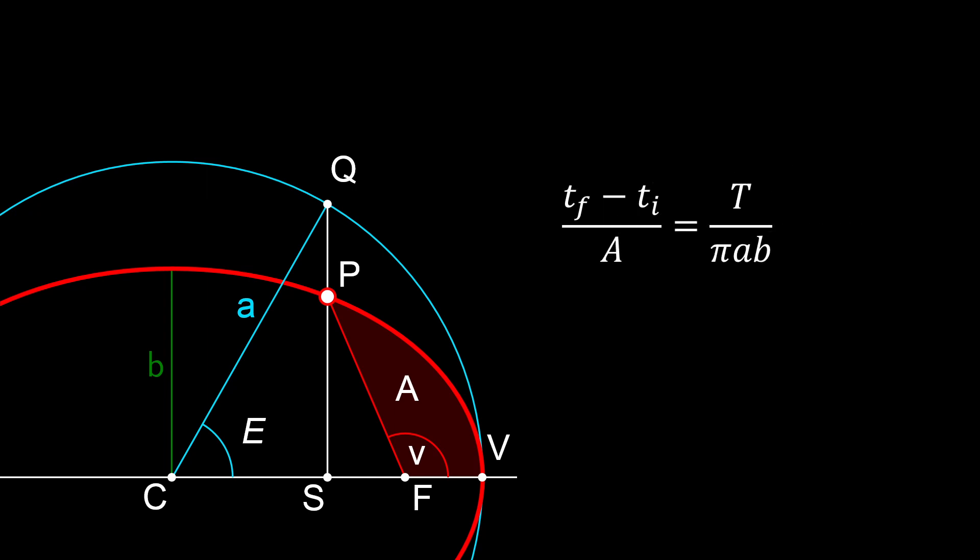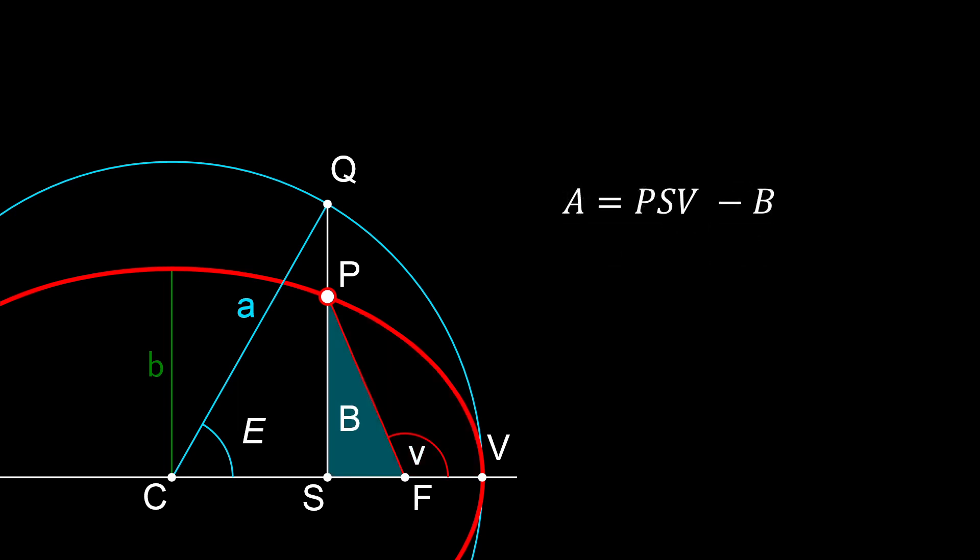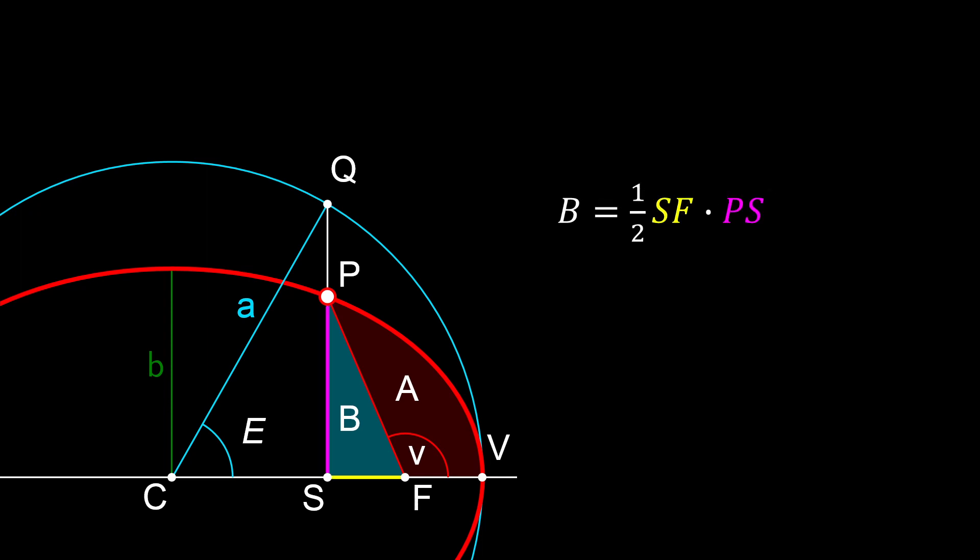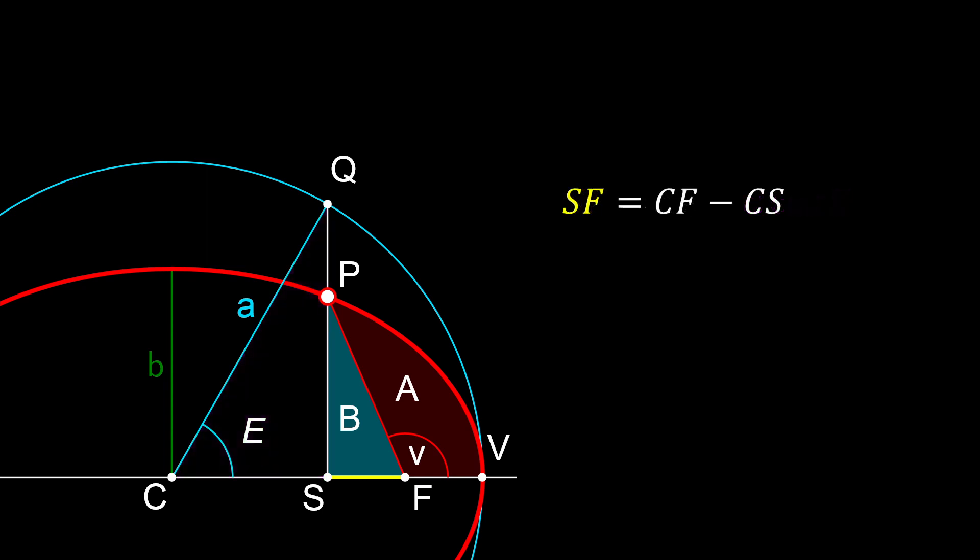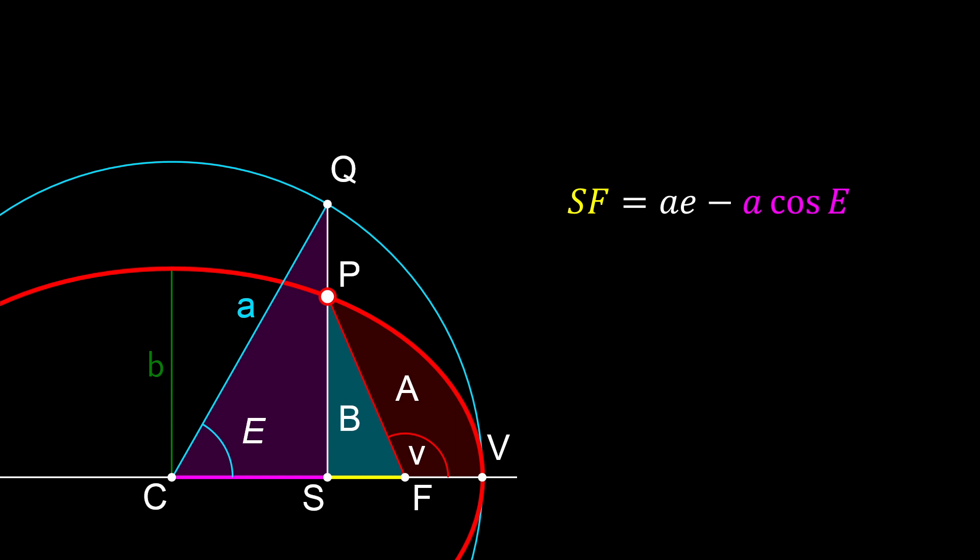Recall that our goal here is to find an expression for the area a in terms of known parameters. We can see here that a can be expressed as the area psv minus b. So we're now tasked with finding those two areas. The area b here is simply the area of a right triangle, one half of base sf and height ps. With a bit of trig, and a handy relationship between the ellipse and the auxiliary circle, we can determine those values. As the distance between the center of an ellipse and its focus is a times eccentricity, sf is equal to a times the eccentricity minus cs. Given the right triangle highlighted, cs is simply a times the cosine of the eccentric anomaly. Hence, sf is equal to a times the eccentricity minus a times the cosine of the eccentric anomaly.